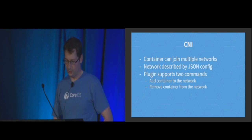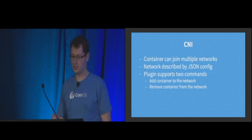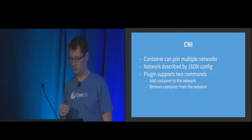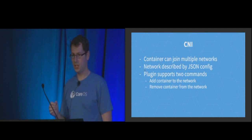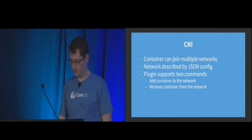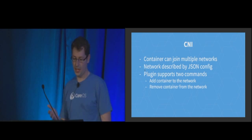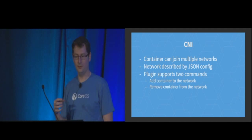So what are the core tenets of CNI? Every container can join one or more networks — we allow multiple networks because in certain situations you might want a container that joins both a database network and a web-tier network. Every network is described by a JSON config, which might be stored on the host as a file or dynamically generated. The actual plugin is pretty simple: it just has to provide two commands — add and delete. Add is invoked when a container is being created, and delete is done when the container is torn down.